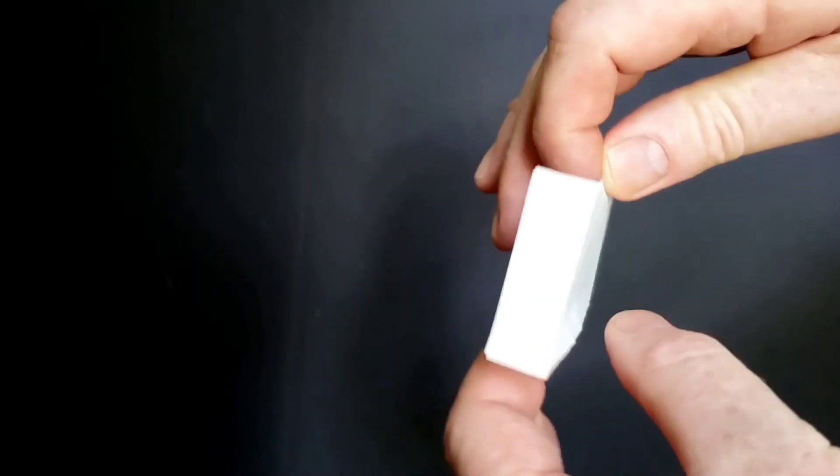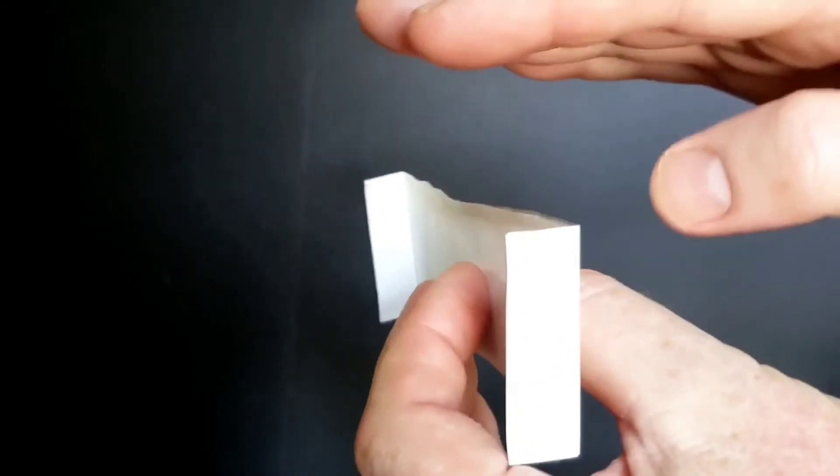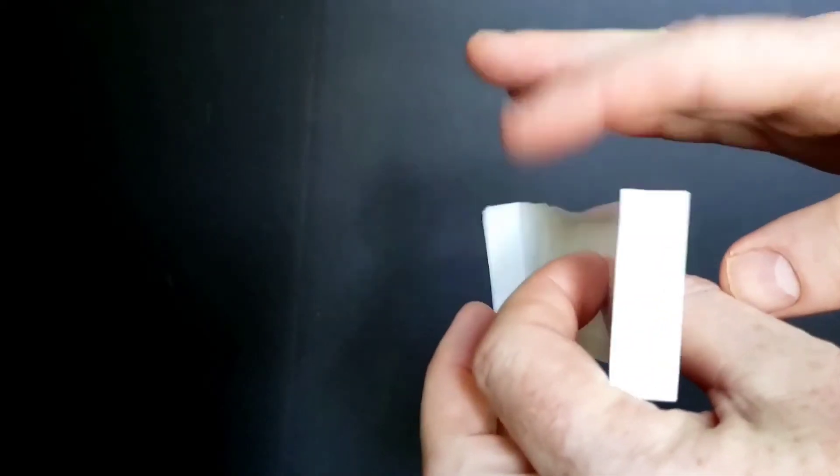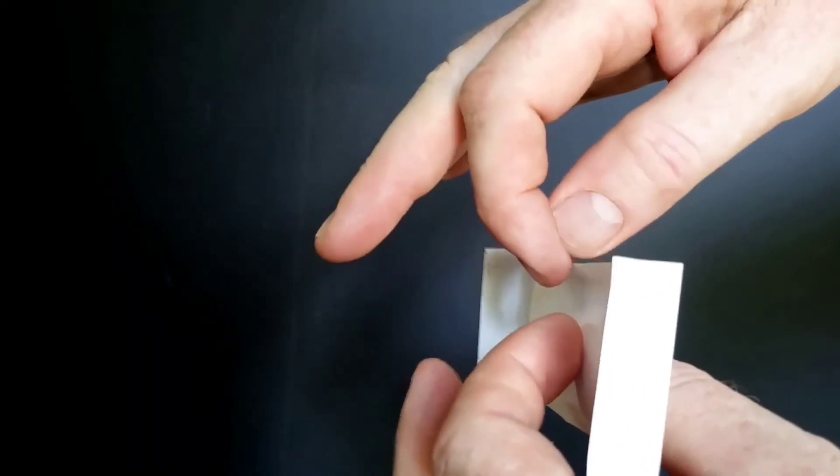To launch your glider, make sure the glider is straight up and down like this. Make sure that the top fold is facing away from you and just hold it by that top fold and let it go. Away we go.